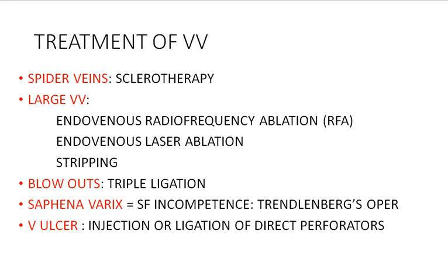For large varicose veins, several techniques may be used like endovenous radiofrequency ablation, endovenous laser ablation, or surgical stripping. If you have blowouts, which signify incontinent perforators, you have to ligate these perforators in the sub-fascial plane and disconnect them from the superficial system. You must ligate the superficial system above and below the level of the affected perforator; this operation is known as triple ligature.